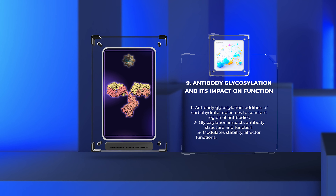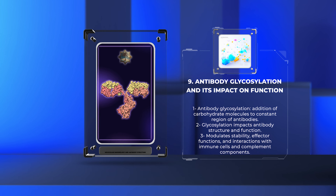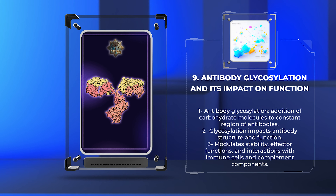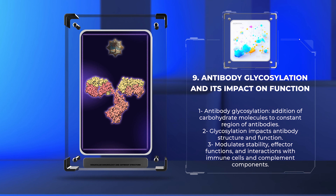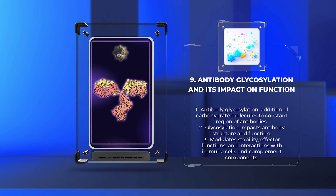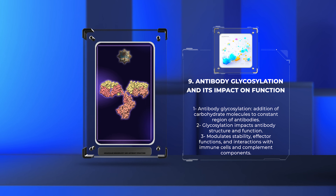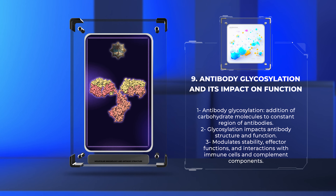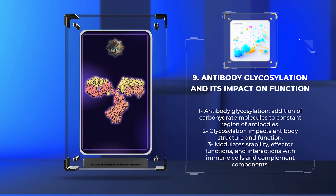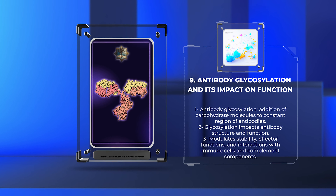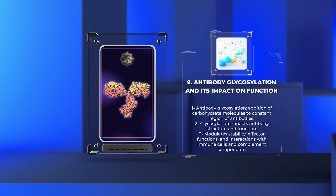Antibody glycosylation refers to the addition of carbohydrate molecules to the constant region of antibodies. Glycosylation significantly impacts antibody structure and function, modulating various aspects of immune responses. Glycosylation patterns can influence antibody stability, effector functions, and interactions with immune cells and complement components. Alterations in antibody glycosylation can affect antibody-dependent cellular cytotoxicity (ADCC), antigen clearance, and the regulation of inflammation.